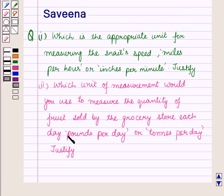And the second part is: which unit of measurement would you use to measure the quantity of fruit sold by the grocery store each day? Pounds per day or tons per day? Justify.